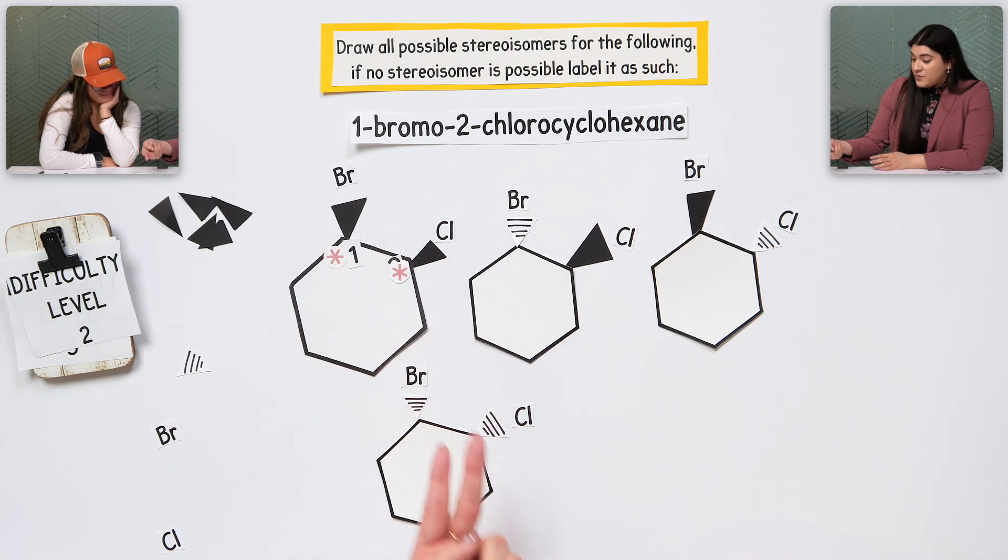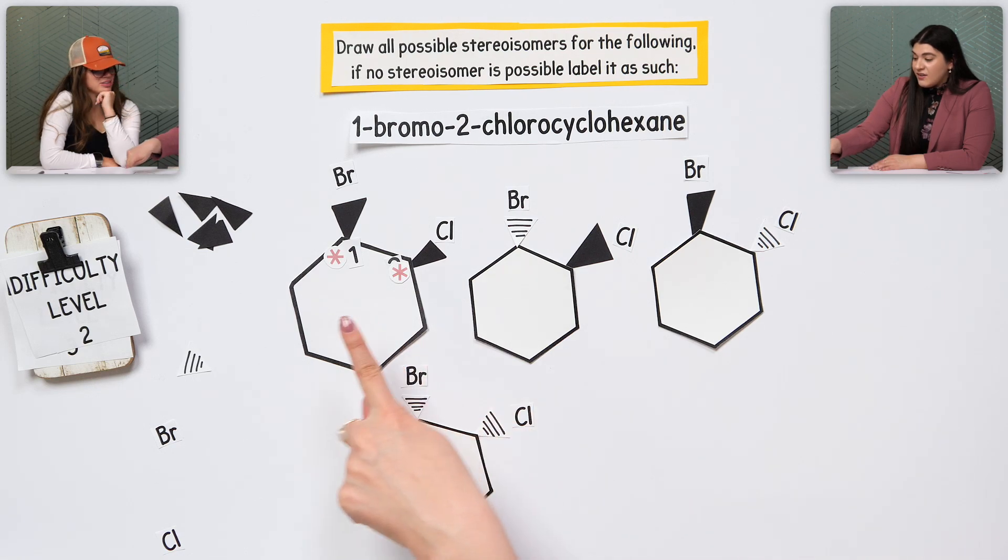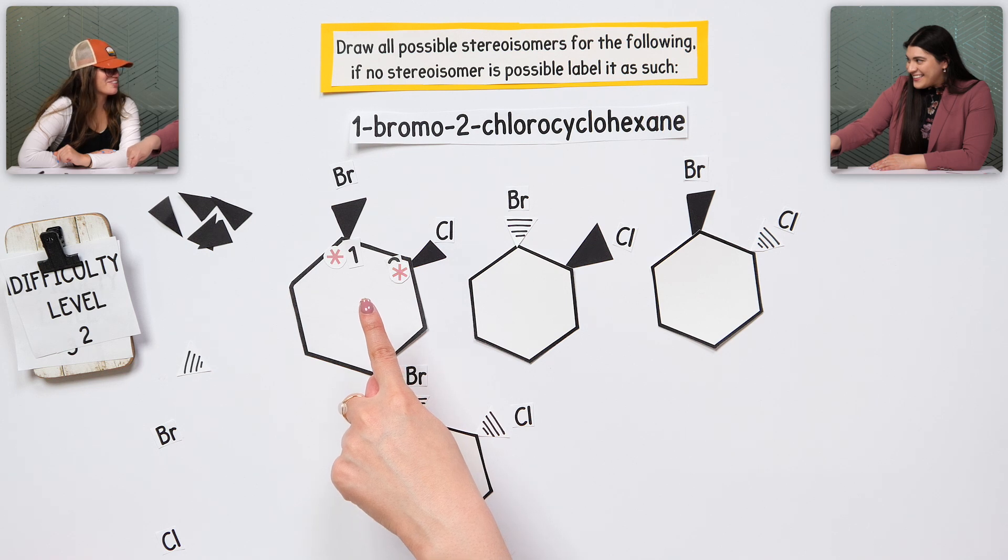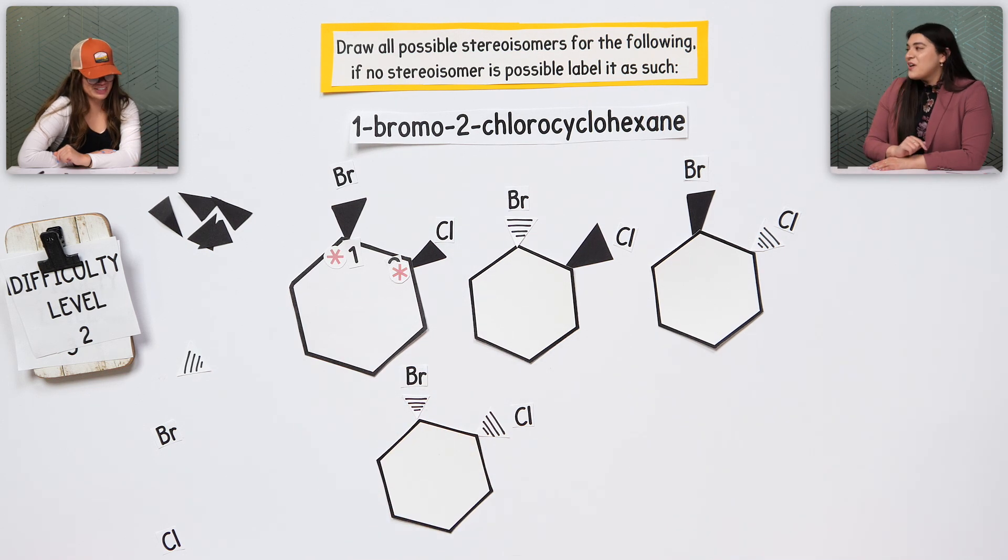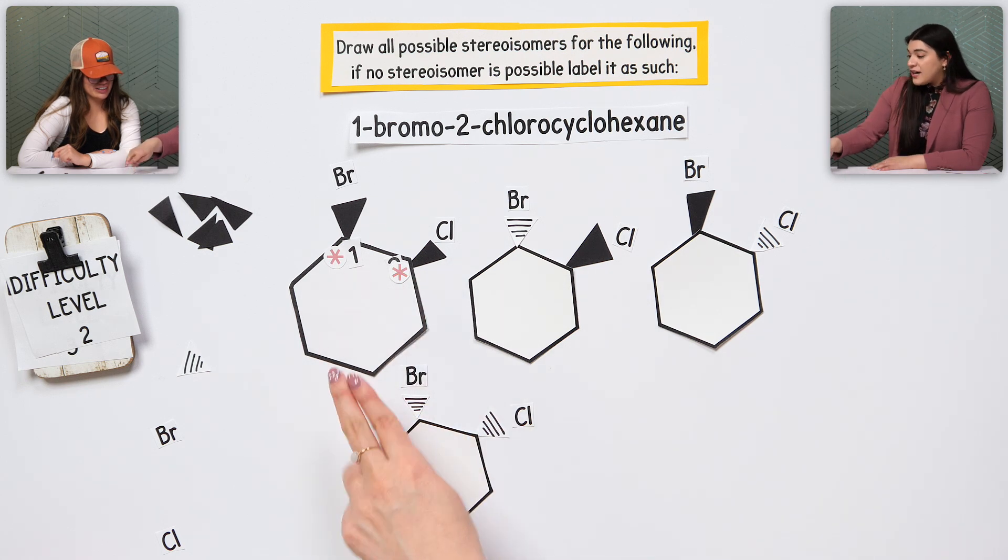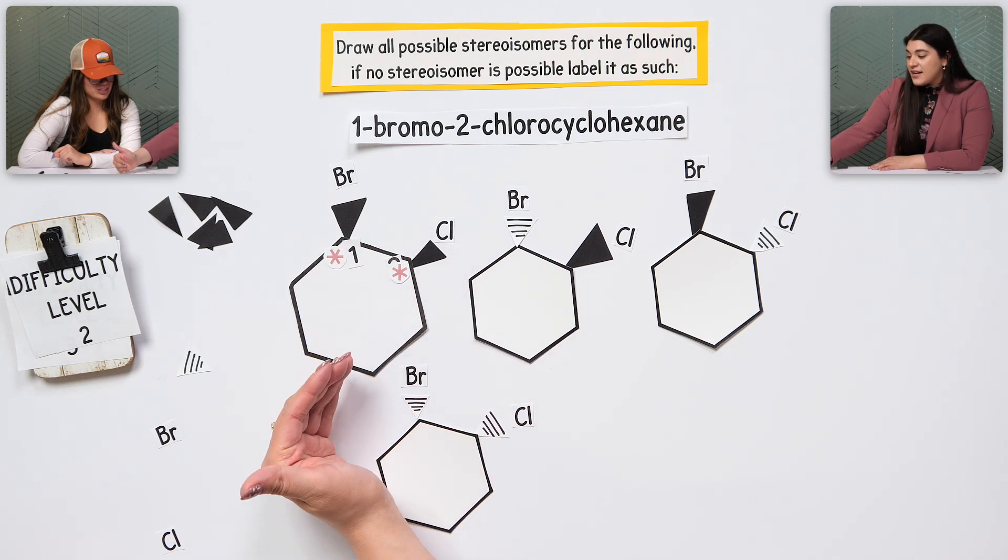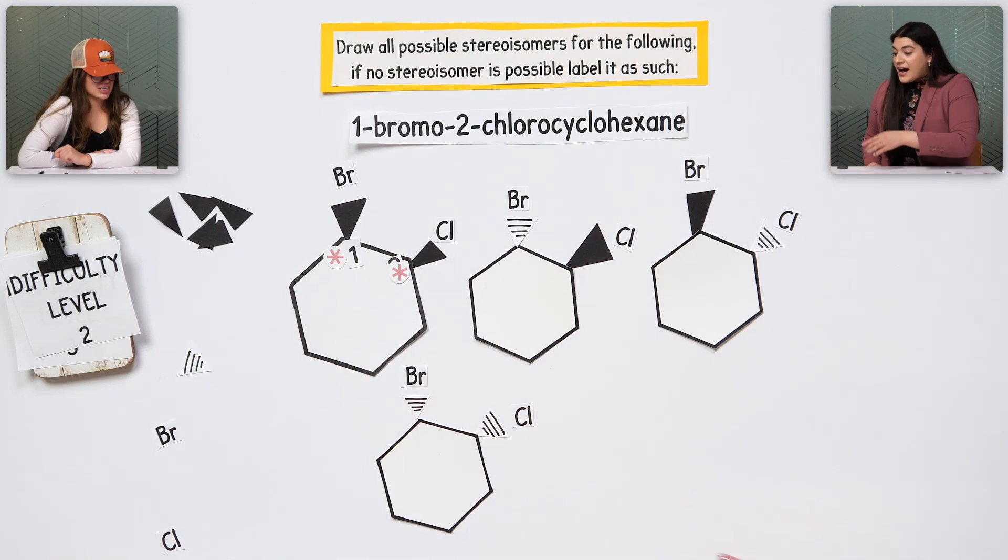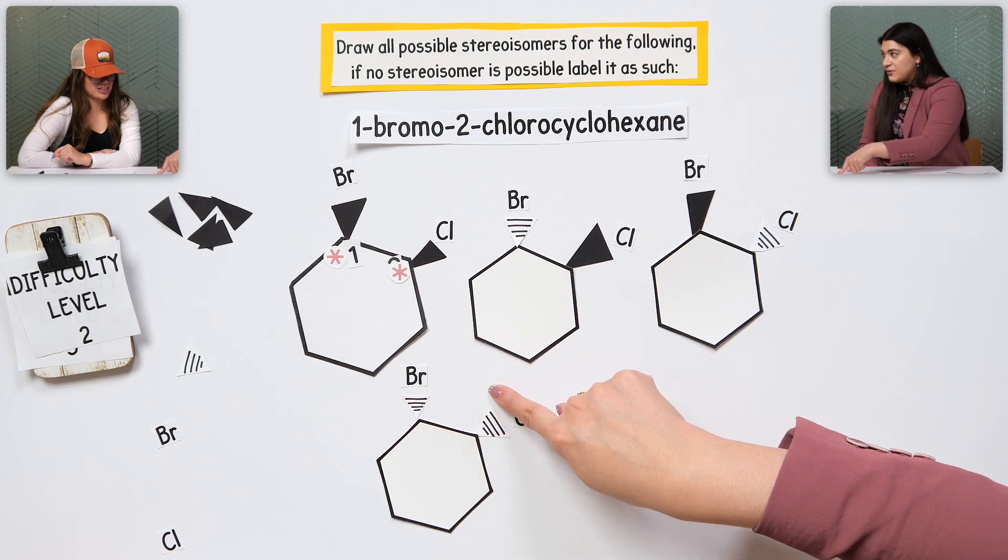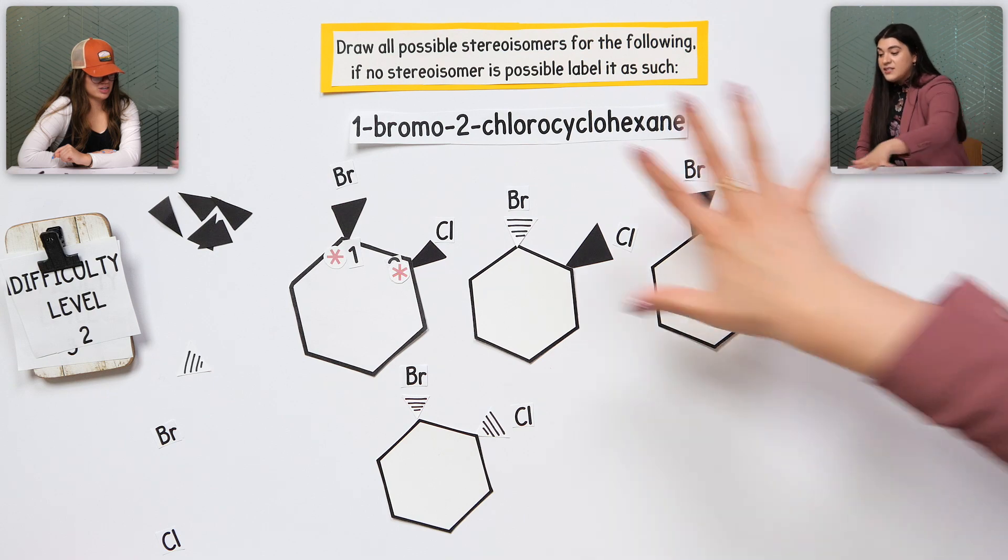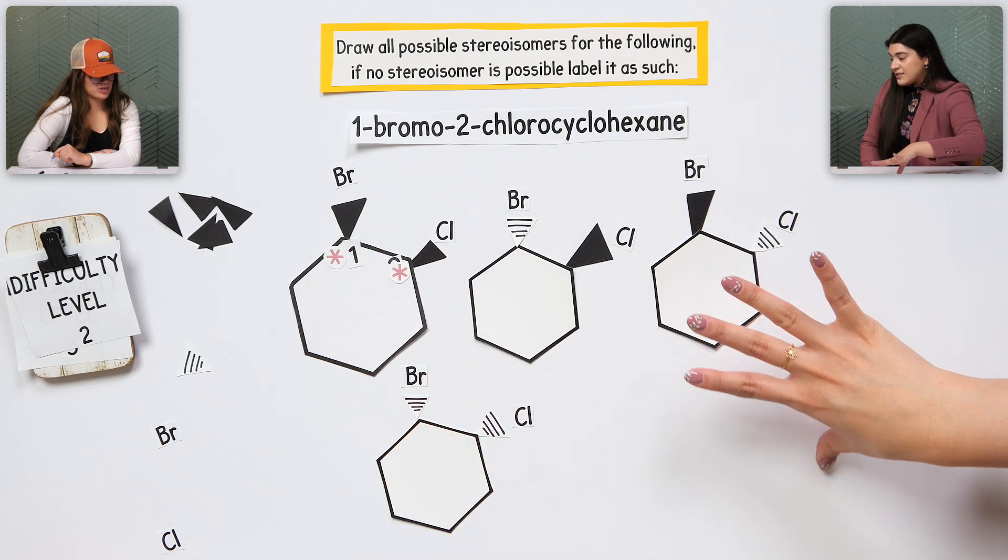And also something to note is I know that this is not a meso compound. Yes. Does that sound familiar? Meso does. I can't remember what it was, though. It's symmetry? It's symmetry. It's an internal line of symmetry. Good. Okay. So, there is no internal line because these are different. They're different substituents. That's why I can't just cut this in half and say that they're going to mirror each other. Yes, yes. So, I can have two different ones here where this is wedged and wedged and this is dashed and dashed. That's why there is a possibility of four stereoisomers here.